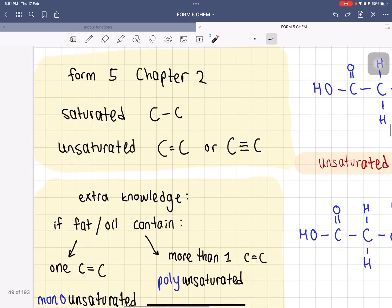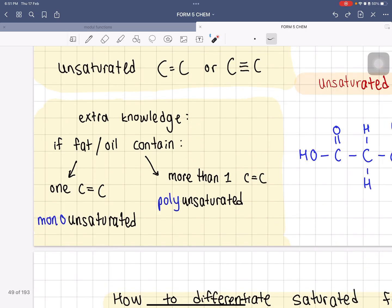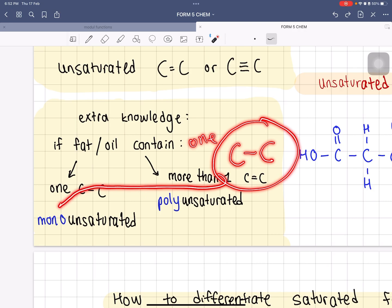If the fat or oil contains only one C=C double bond, there's only one, then it's mono-unsaturated fatty acids. But if there's more than one, then automatically it becomes polyunsaturated. This thing applies to saturated fats as well. If there's only one C-C single bond, it's a mono-saturated fatty acid, but if it's more than one, it's a poly-saturated fatty acid.